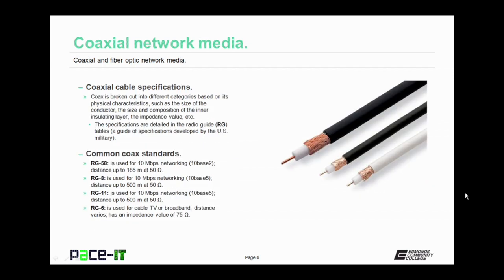Now let's talk about coax cable specifications. Coax is broken out into different categories based on its physical characteristics, such as the size of the conductor, the size and composition of the inner insulation layer, and the impedance value. These specifications are detailed in the radio guide tables. The RG tables were a specification developed by the US military. They no longer use it, but we still use the RG specifications to talk about coax.